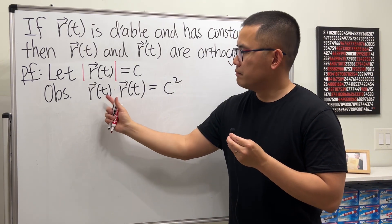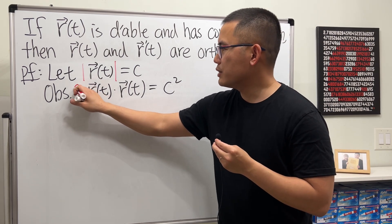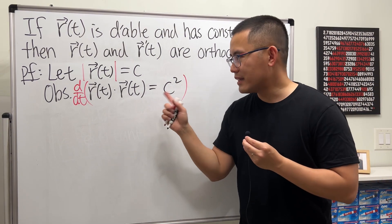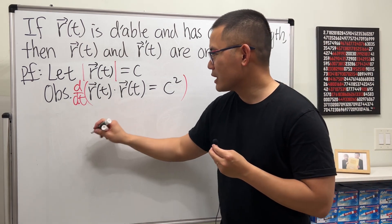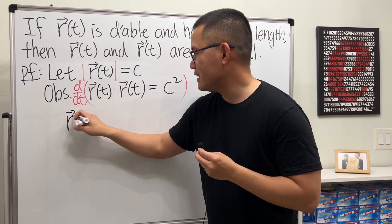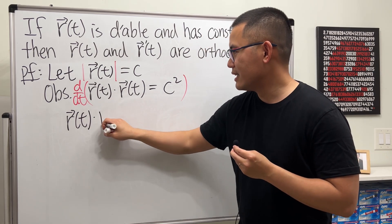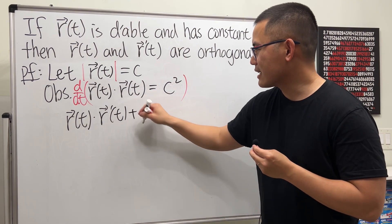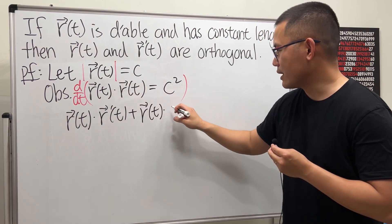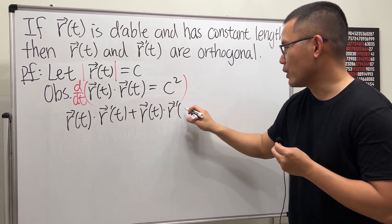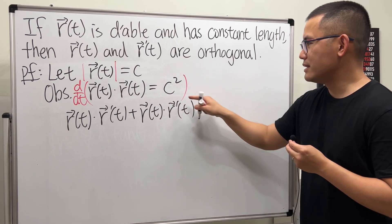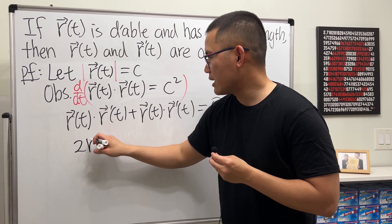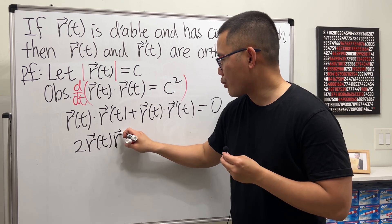Now we have a dot product of these two vector functions. Let's take the derivative with respect to t, using the product rule for the dot product of vector functions. We keep the first function r(t) and multiply by the derivative r'(t), then add the derivative of the first function dotted with the second. The derivative of a constant is zero, so this gives us 2·r(t)·r'(t) = 0.